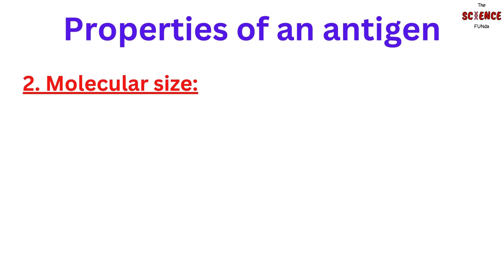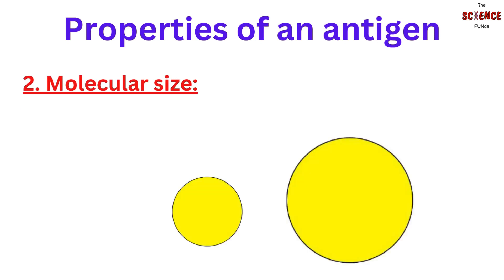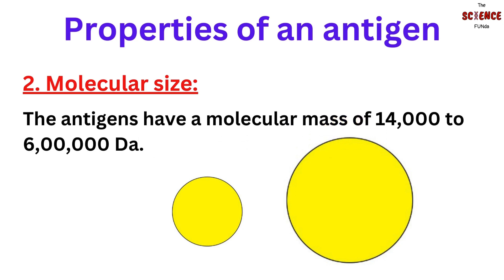The second property is molecular size. Size is an important determinant for antigenicity. Antigens have a large molecular weight, with a molecular mass of 14,000 to 600,000 Dalton. Molecular structures of lesser molecular weight do not elicit an immune response, whereas maximum stimulation of the immune system is achieved with antigens of high molecular weight.